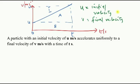So how do we describe such a graph? We say a particle with an initial velocity u m/s accelerates uniformly to a final velocity v m/s in a time of t seconds.